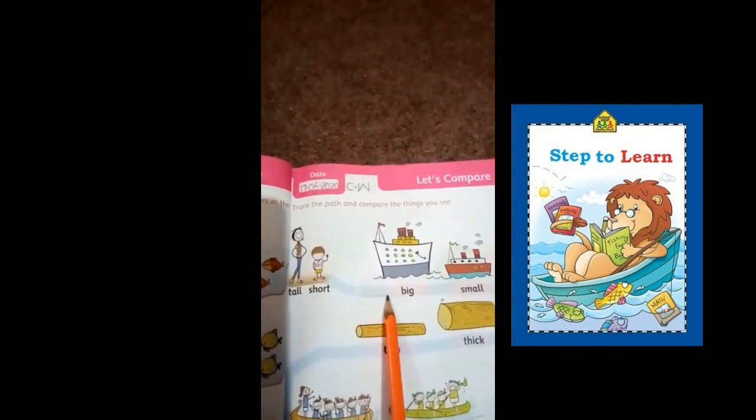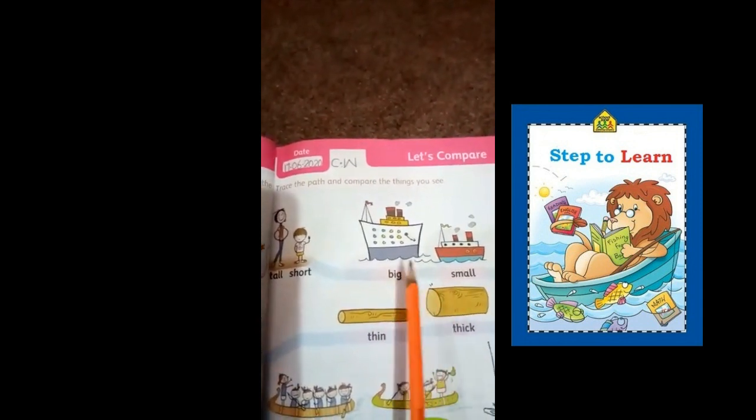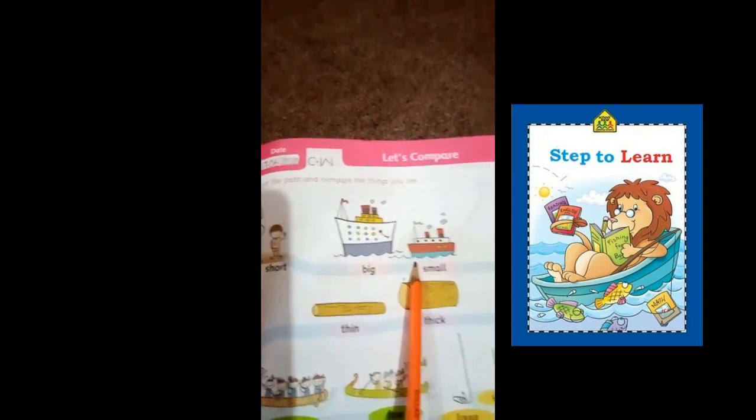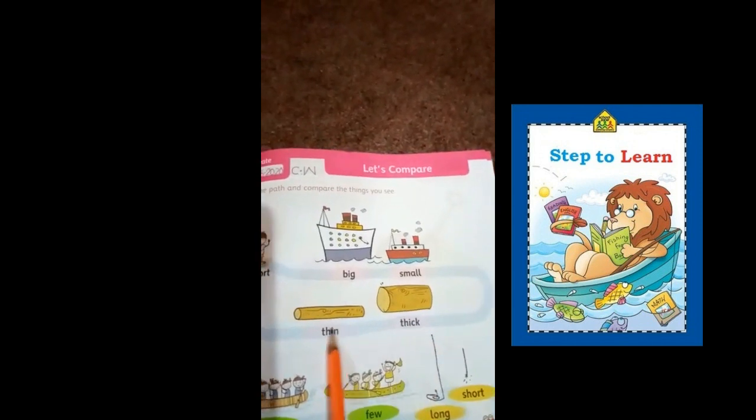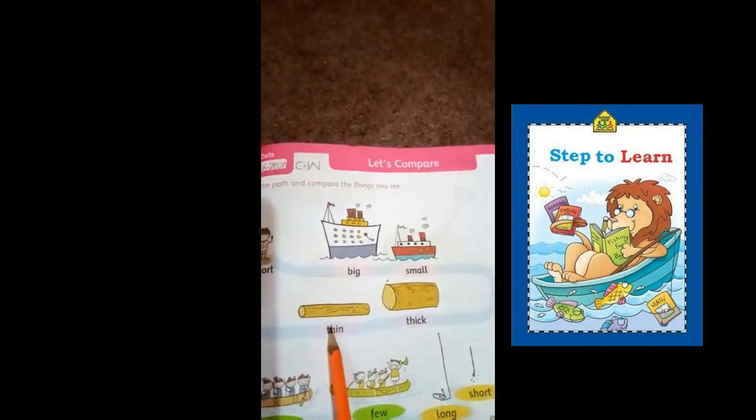Next, big and small. A big ship and a small ship. Now going through this path, thick and thin. Thick and thin.